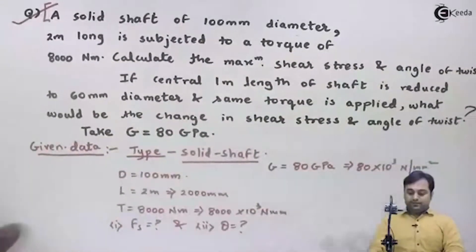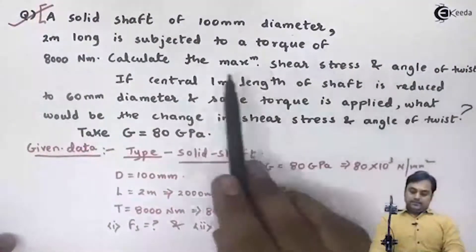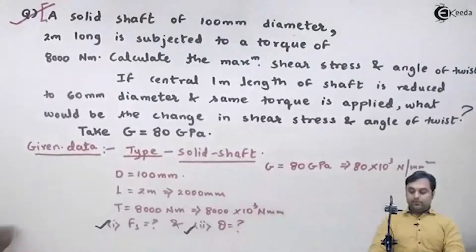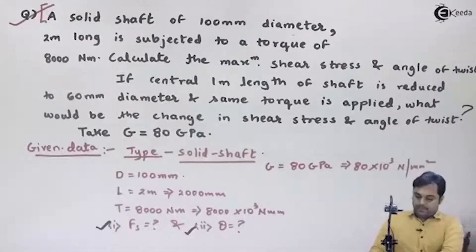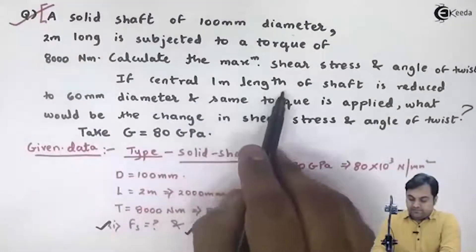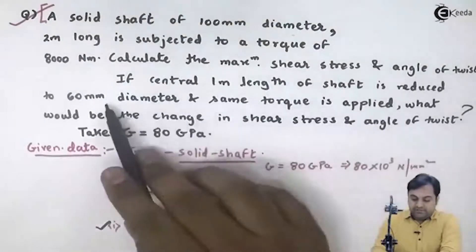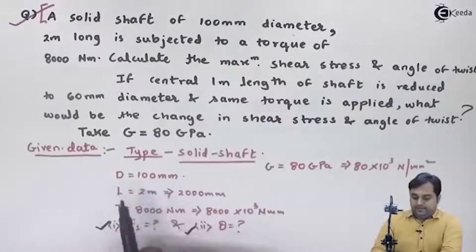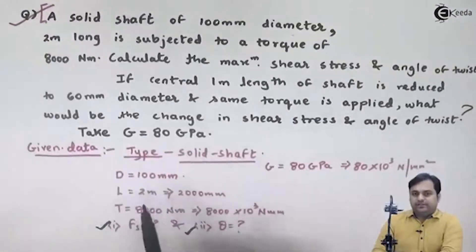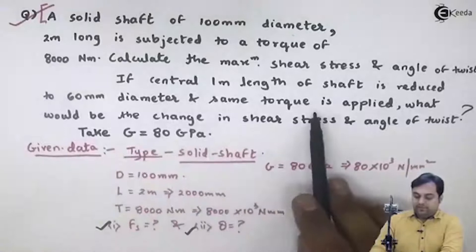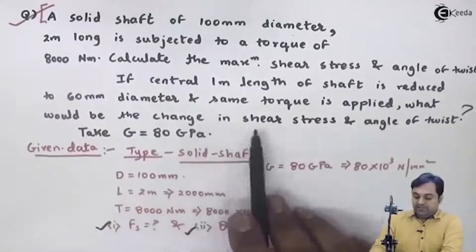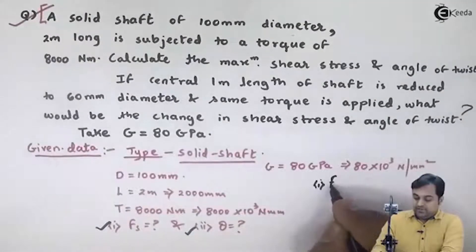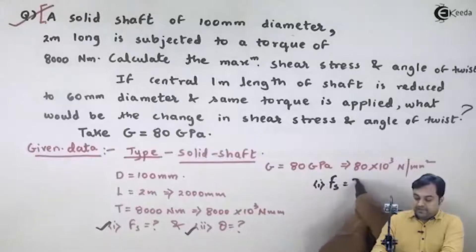The first part of the question asked us to calculate maximum shear stress and angle of twist, and we have calculated both. Now we read the second part: if the central 1 meter length of the shaft is reduced to 60 mm diameter — the original diameter being 100 mm — and the same torque is applied, what will be the change in shear stress and angle of twist? We need to calculate Fs and angle of twist for this second condition.